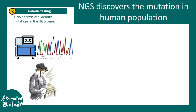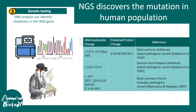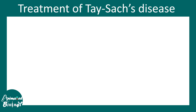Next generation sequencing has discovered many mutations prevalent in Ashkenazi Jewish and other inbred populations, and each of these nucleotide differences has changed the protein and the activity of these enzymes. Such high-throughput approaches allow us to understand Tay-Sachs disease pathology and etiology in a much better fashion.